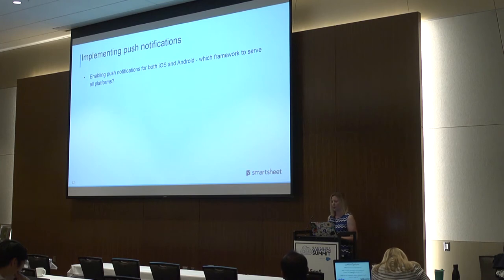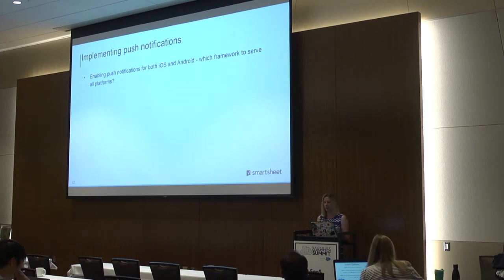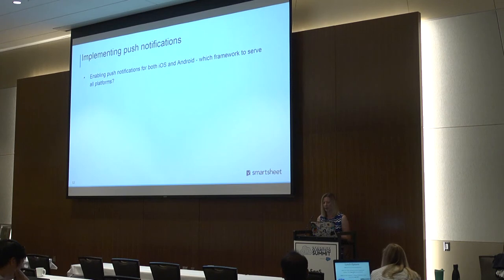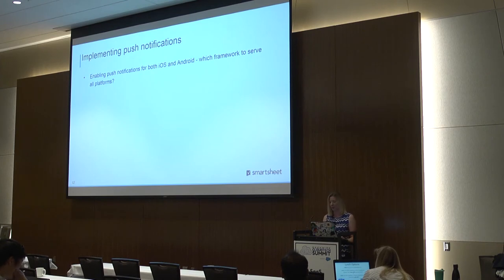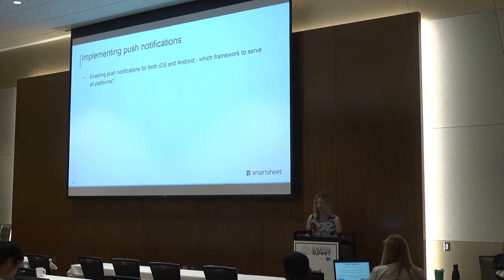Push notifications were also new for us in this project, and we evaluated several different frameworks — the major players like Amazon SNS, Google GCM, and Firebase, and other popular options like Urban Airship and OneSignal. Urban Airship and OneSignal also give you the ability to manage messaging campaigns over push notifications, but we didn't really need that functionality and didn't want to pay for it. In the end, we decided to build our own framework that targets each platform directly: Google GCM for Android, Apple APNS for iOS, and Amazon SNS for Kindle. We ended up dropping support for Kindle before we went live, as that platform just isn't used by our customers very heavily, so it didn't make sense to incur that cost of supporting it.